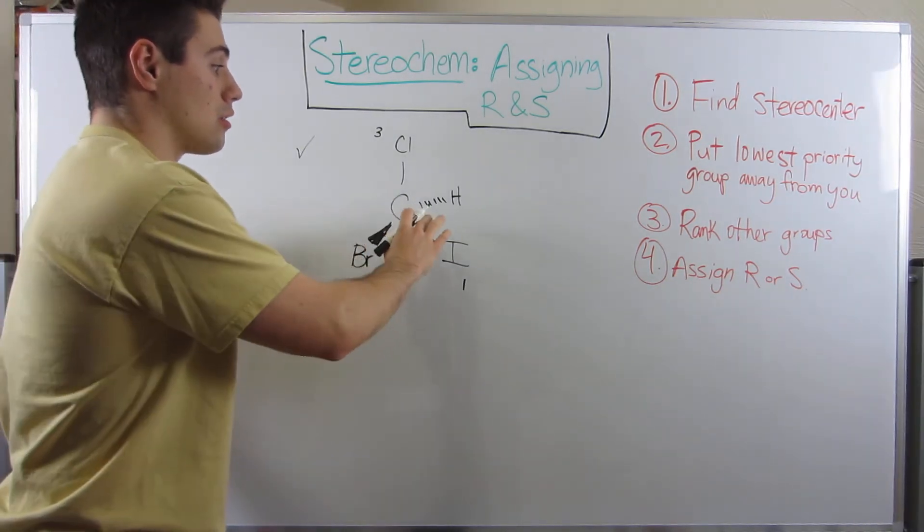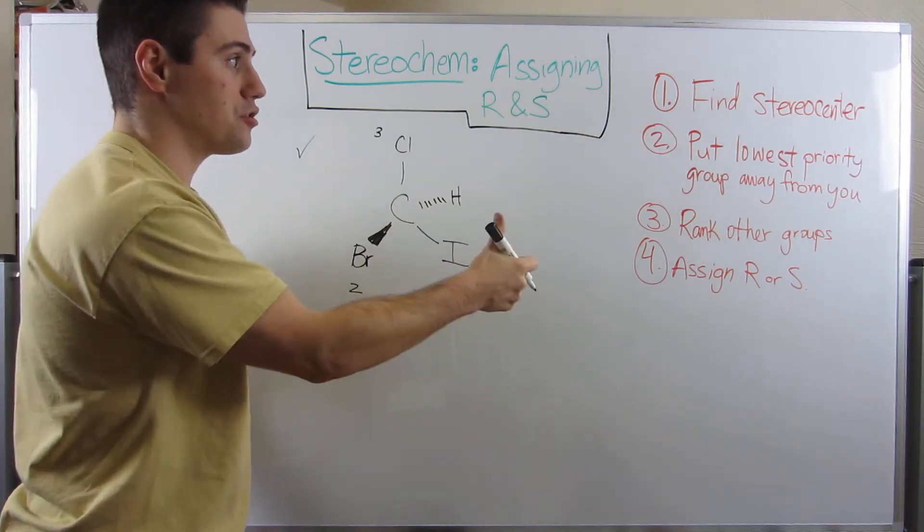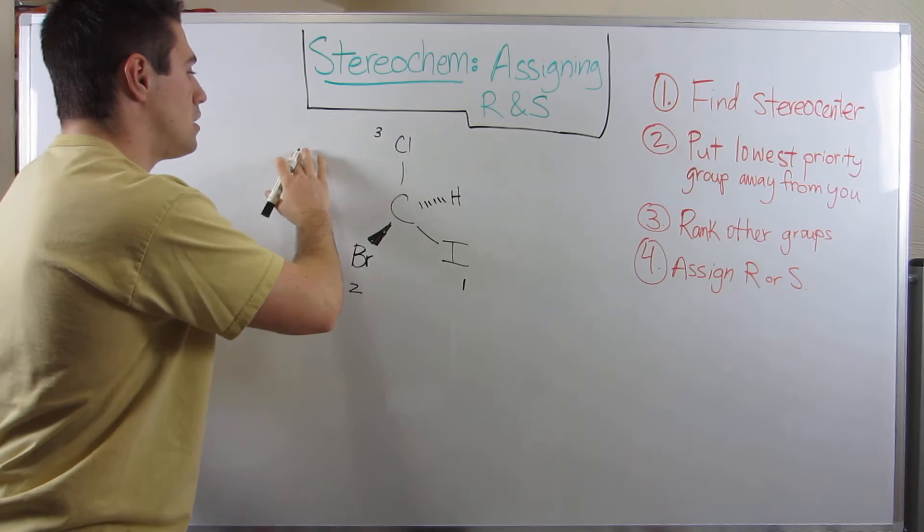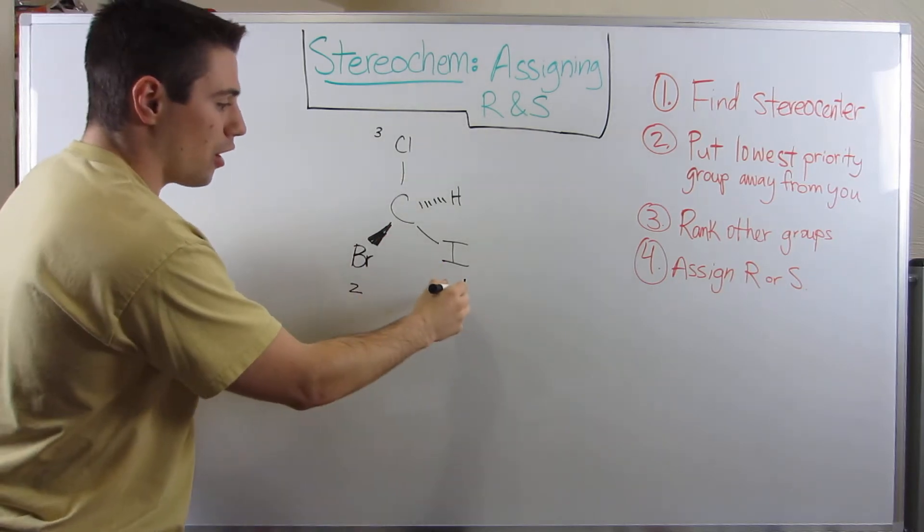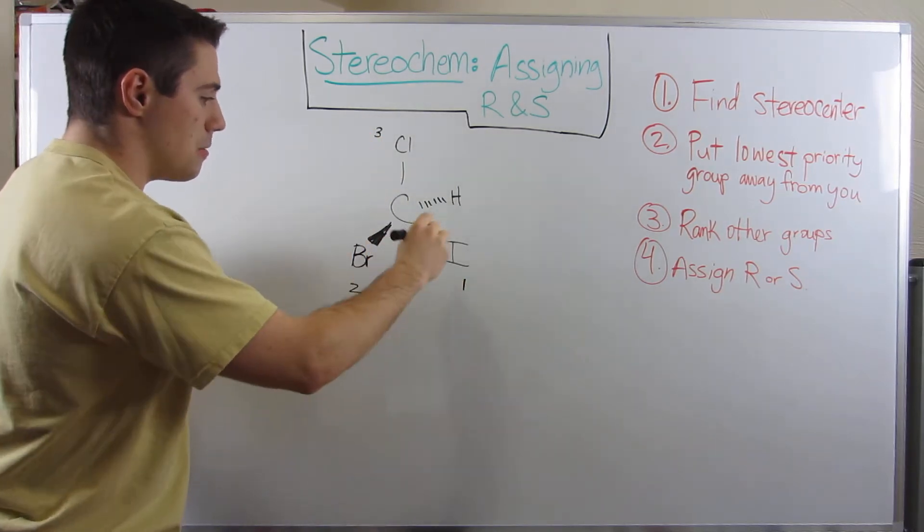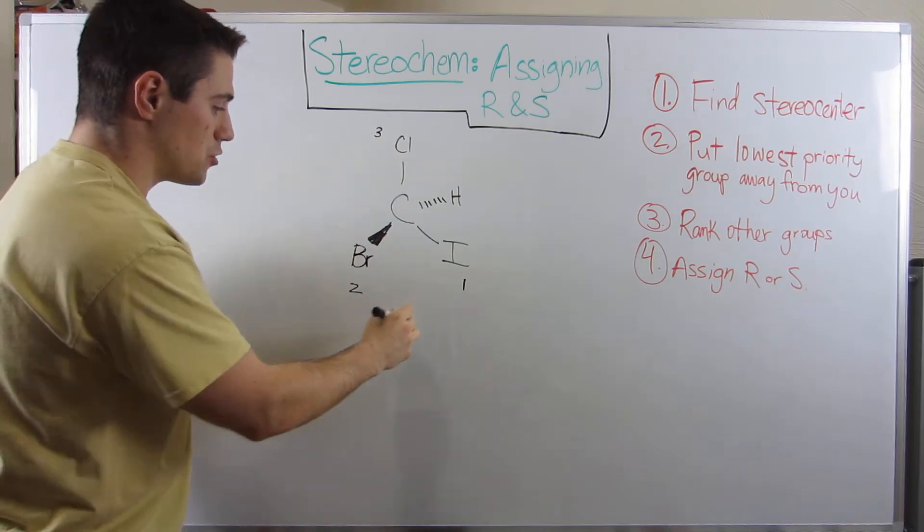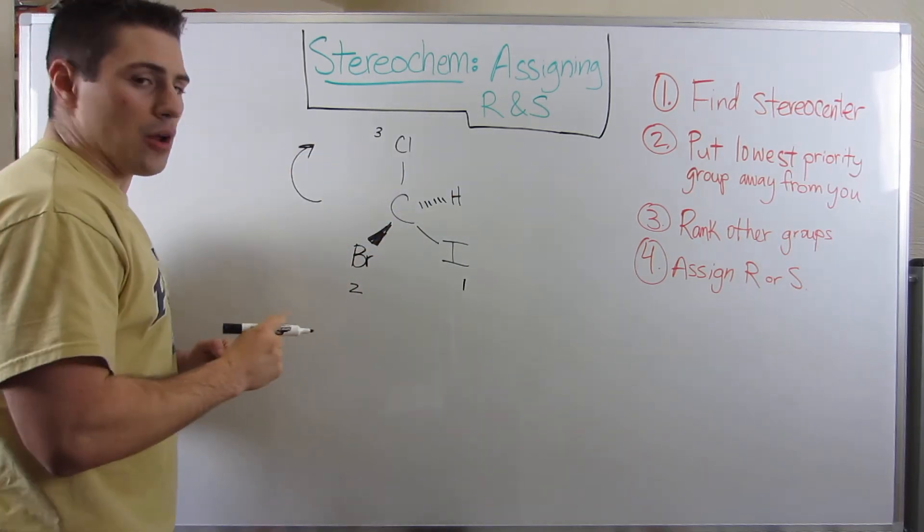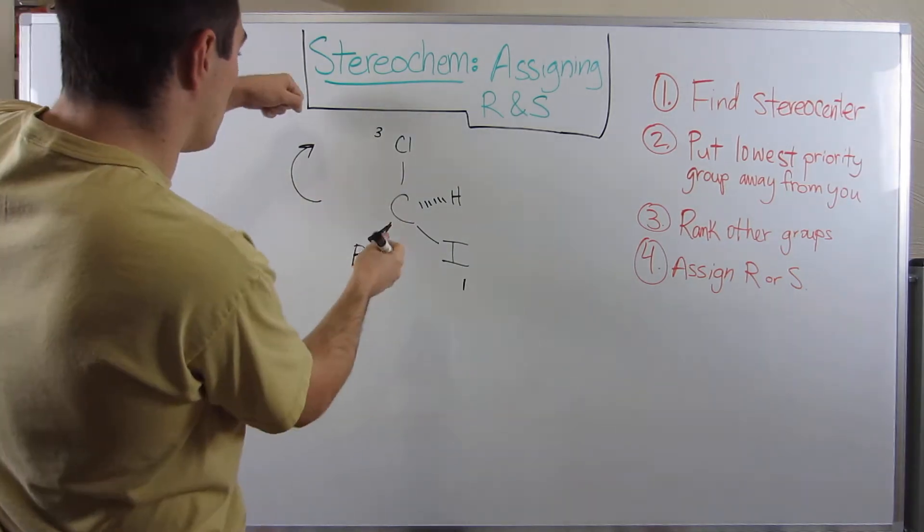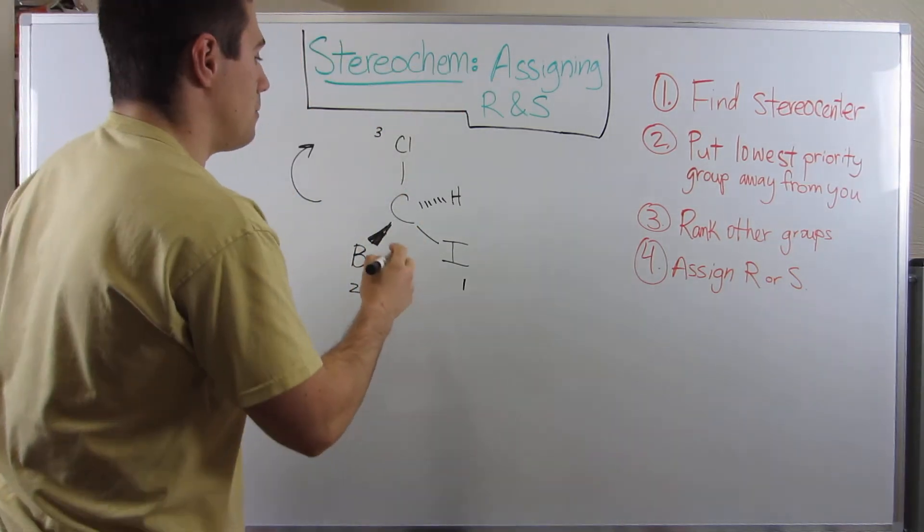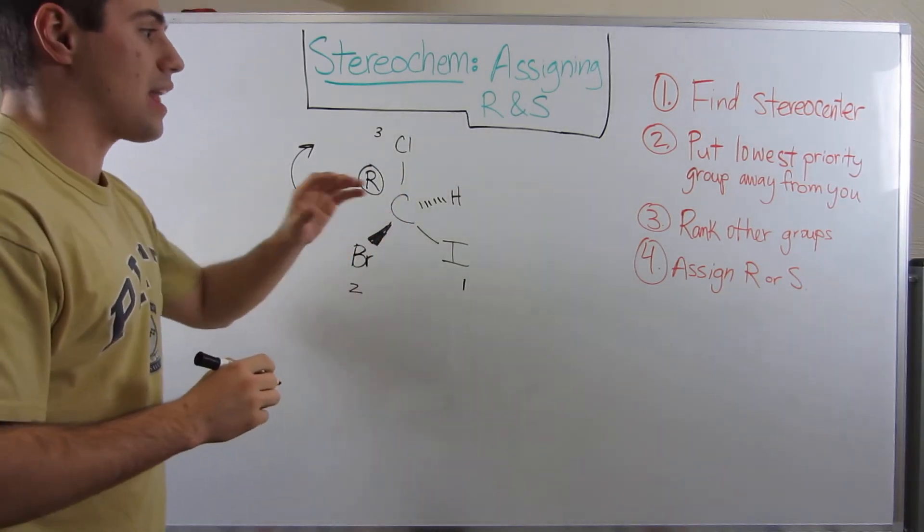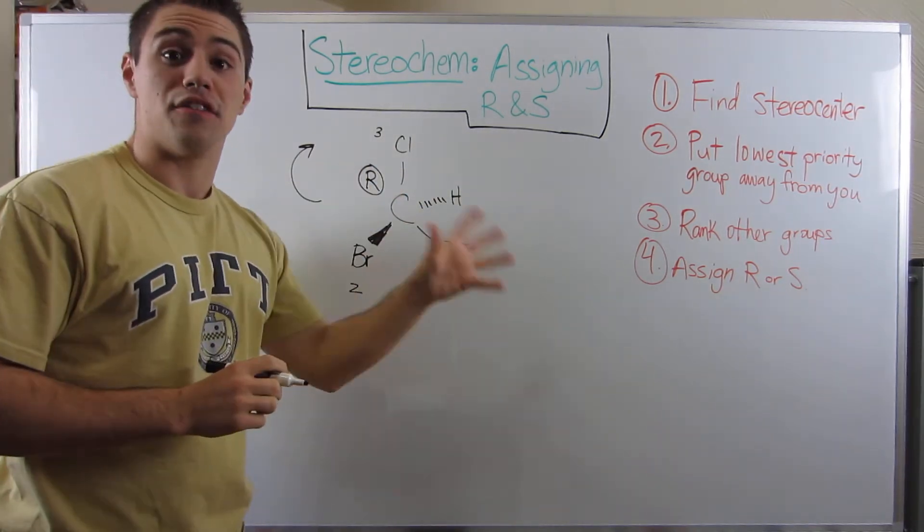Okay. So our lowest priority group is facing away from us. So number two is a check. We've ranked our groups. So now what you kind of do is you either make, you have to follow one, two, three, and kind of make a little circle as to which way those numbers are going. So it looks like this way. And almost think about if you're turning the wheel of car, we'd be going to the right. So that means that this carbon is R. This stereocenter, that's his stereochemical configuration.